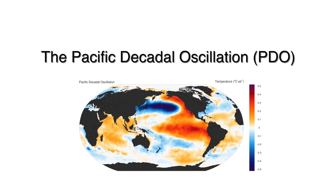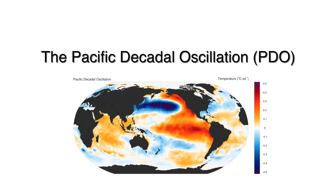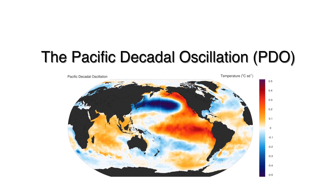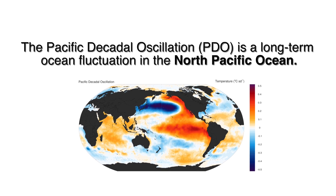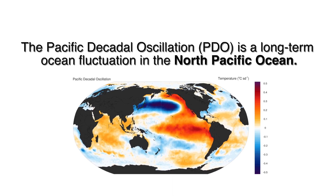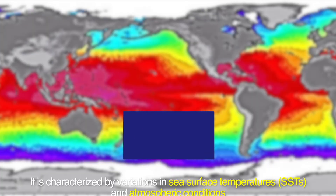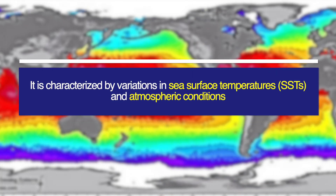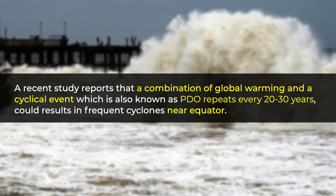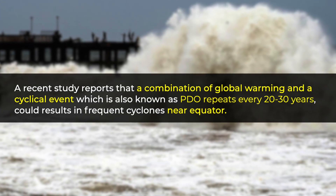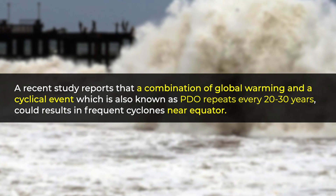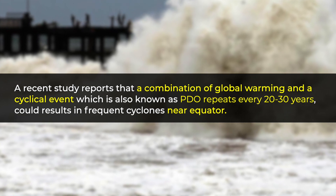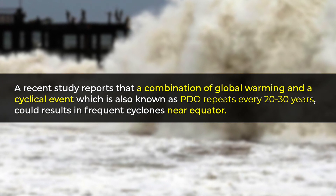Hello, Aspirants. Today, in this video, we are going to discuss about the Pacific Decadal Oscillation. What is Pacific Decadal Oscillation? It is a long-term ocean fluctuation in the North Pacific Ocean, characterized by variations in sea surface temperatures and atmospheric conditions. A recent study reports that this cyclical event repeats every 20 to 30 years — that's why the name is given as Pacific Decadal Oscillation.